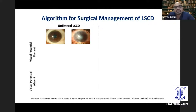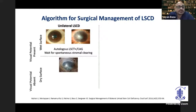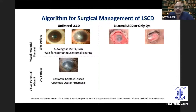For unilateral LSCD, we look at the chance of visual potential. If the surface is wet and there is visual potential, we usually go for stem cell transplantation in the form of SLAT with or without conjunctival autografting, and we usually leave the stroma alone and let it clear. With time it remarkably improves — if clarity improves, patient's vision improves. If the eye does not have visual potential or has very limited potential, amblyopic, very dry surface, and it's unilateral so the patient is not functionally limited, we leave it alone and give the patient a cosmetic option.